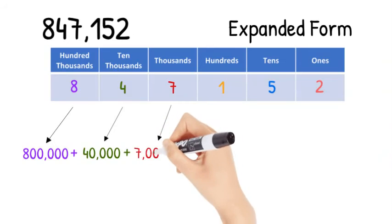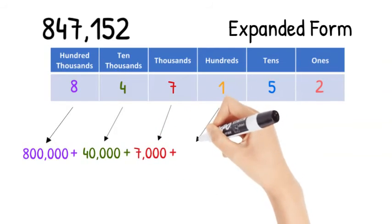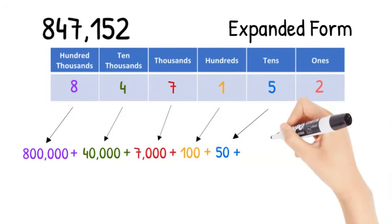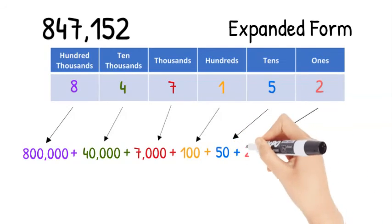Now we can add 7,000 and 100. 5 tens equals 50. And finally let's show 2 ones which is simply 2.